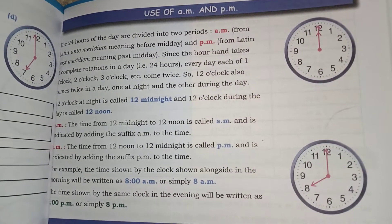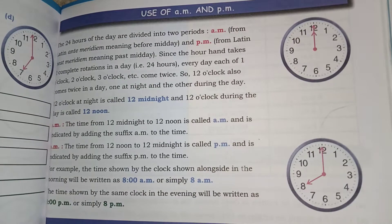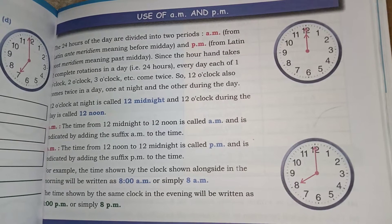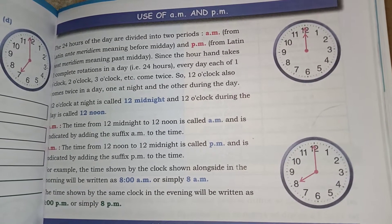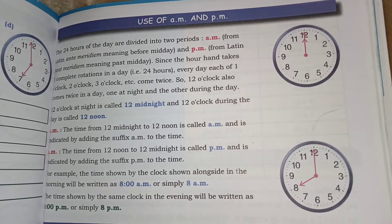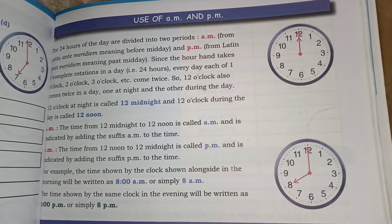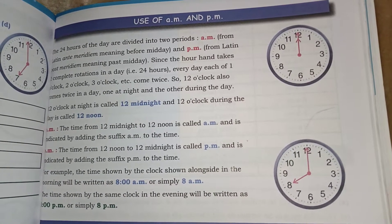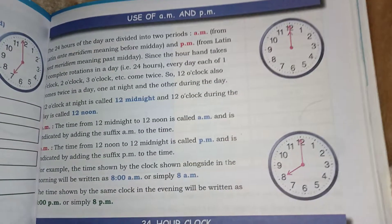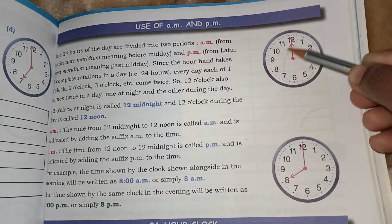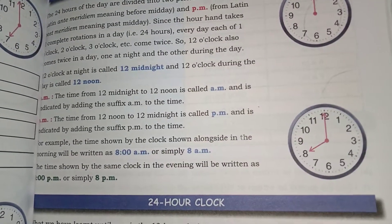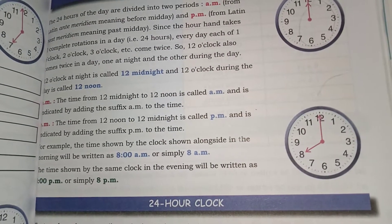Good morning children, today we will discuss two topics: the use of AM and PM. We know that the 24 hours of the day are divided into two periods — AM and PM. 12 o'clock at night is called 12 midnight. In one watch the whole rotation happens twice — we reach 12 midnight and we say midnight, and we say noon in the day.